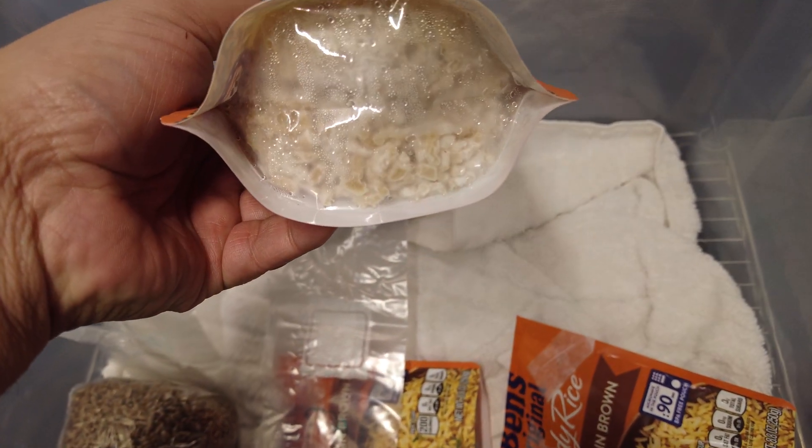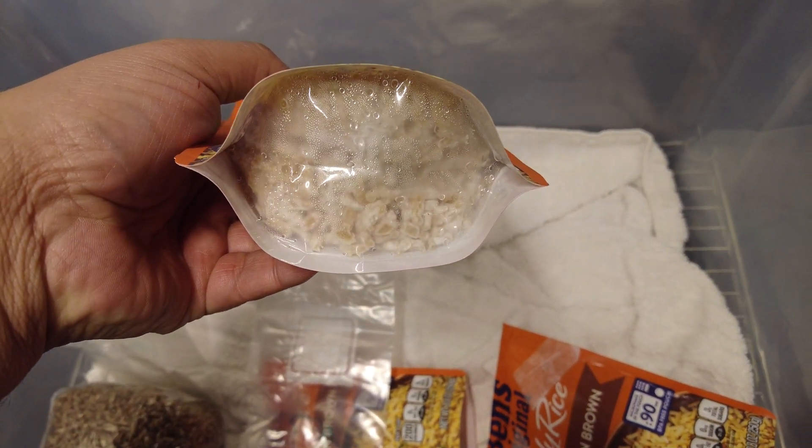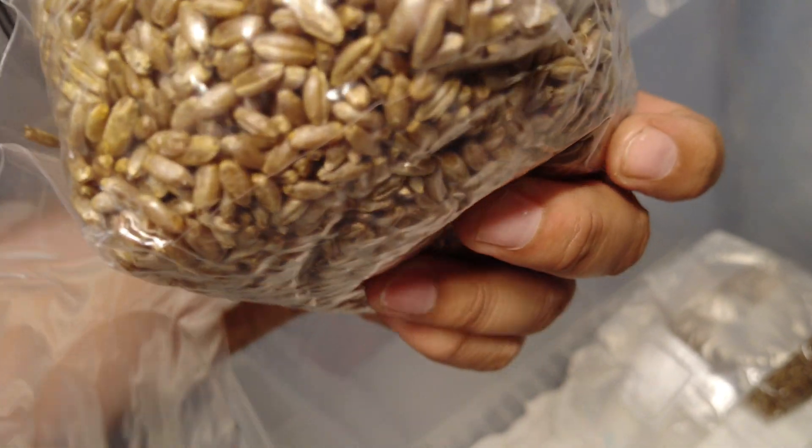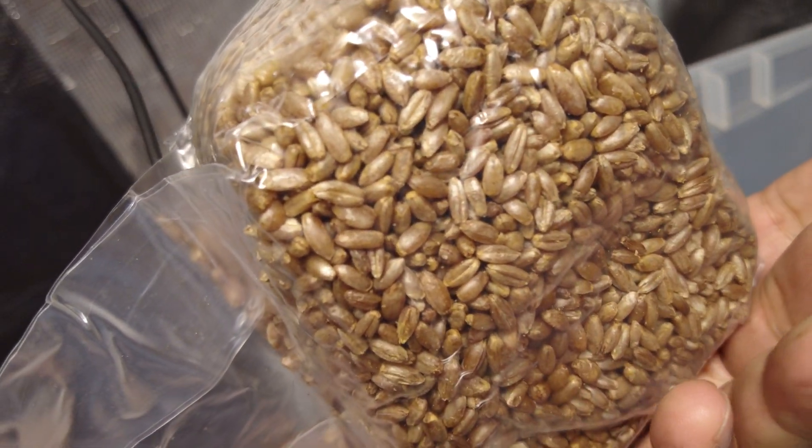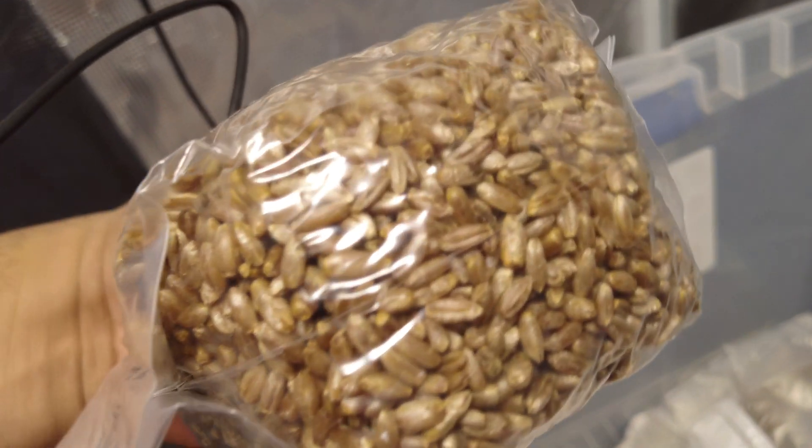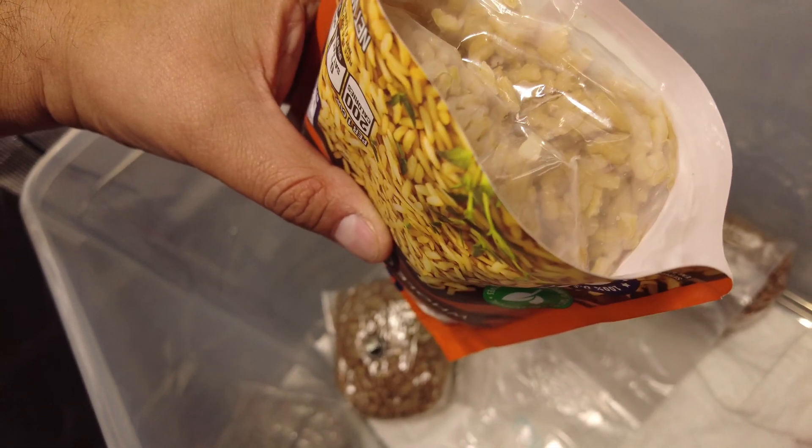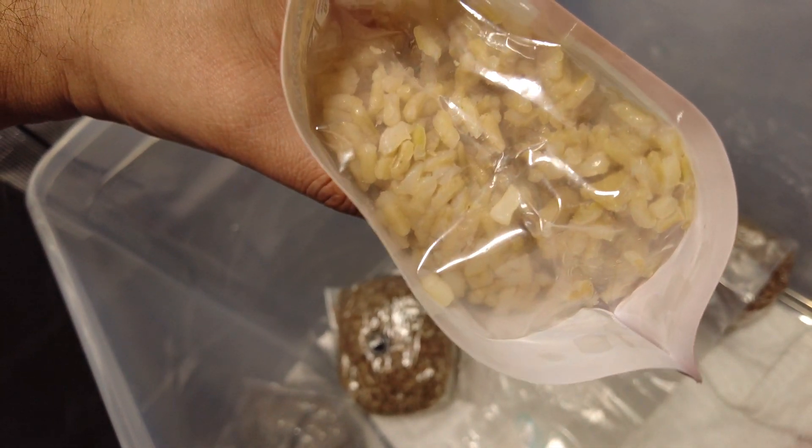The Ben's rice bags seem to be moving a little bit quicker. The barley inoculated with Ecuadorian cubensis doesn't show any real mycelium development. Neither does the Ben's rice inoculated with the same. I don't know if I did, or I'm doing something wrong, but I guess I'm just going to have to be patient with it.